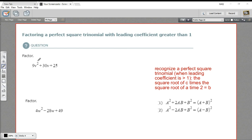What you should be looking for is something that you can easily take the square root of in the first term and something you can easily take the square root of in the last term. If you've got that, in this case, the square root of this would be 3v and the square root of this would be 5.